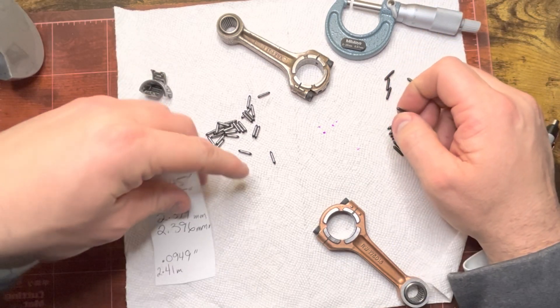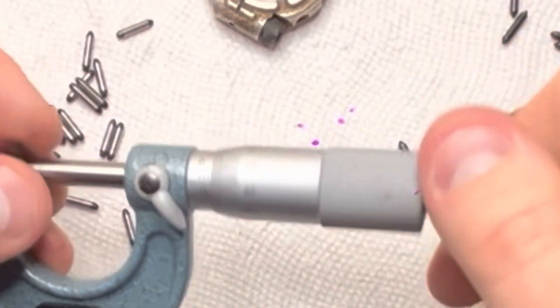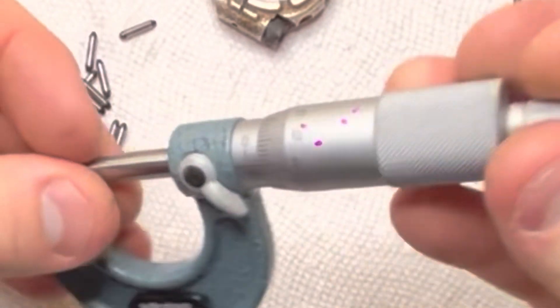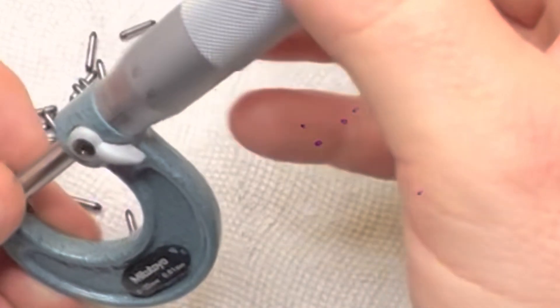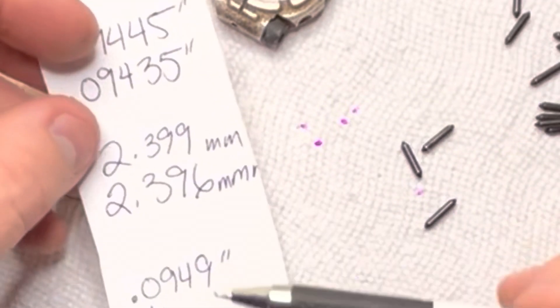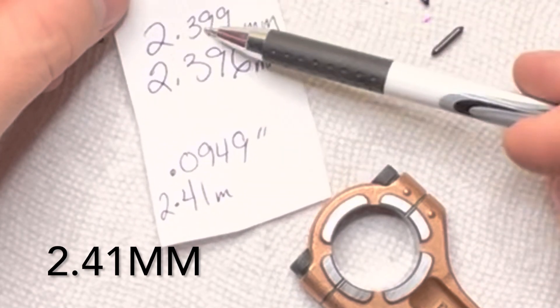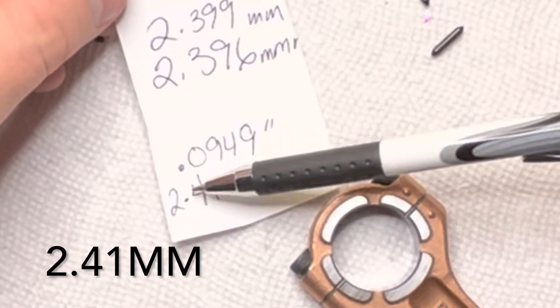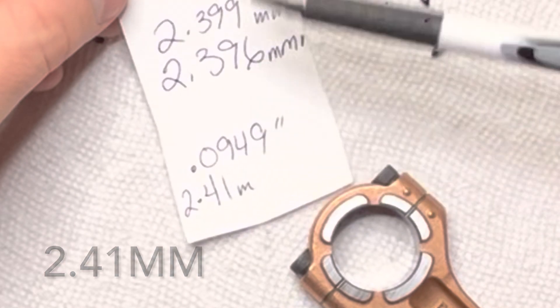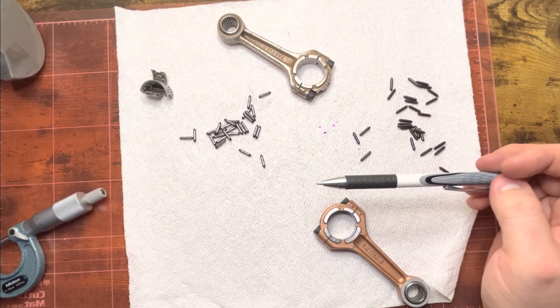But let's look at Mike's bearings. And remember, this is our minimum and maximum per the manual. 2.4, 1, 2.4, 1, 2.4, 1. You get the picture. They are actually oversized. When you look in the manual, it tells you 2.399, almost 2.4. These are 2.41 or 0.0949 is what these are. And your max is 0, 9, 4, 4, 5. So Mike's bearings are actually oversized bearings.